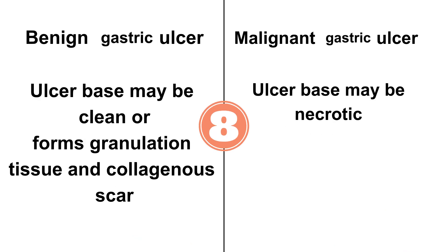In benign, the ulcer base may be clean because of digestion by the peptic enzymes, or it may form granulation tissue and collagenous scar, while malignant will have a necrotic base.